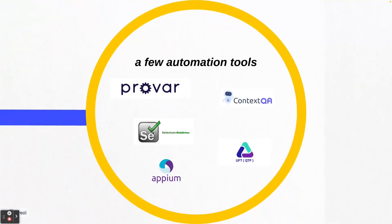The next section covers a few automation tools. This slide doesn't contain all tools, but highlights a couple of famous ones being used for test automation: Prover, ContextQA, Selenium WebDriver, UFT, and APM. In this tutorial and entire course, we are going to focus only on Selenium WebDriver. In subsequent videos, I'll also be making more videos on ContextQA and Prover as well.